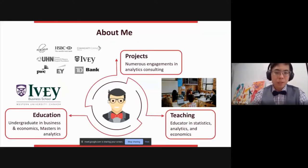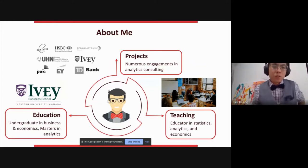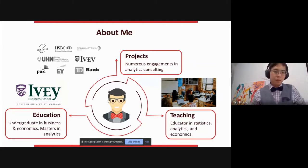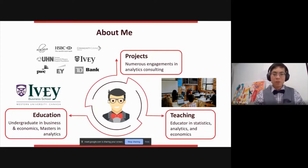A little bit about me. Education-wise, I did three degrees at Western University. I did my undergraduate in business at Ivey Business School, the honors specialization in economics, where I focused on micro and macro economics and econometrics — which is just a fancy word for statistics for economics. I also did my Master of Science in Analytics.